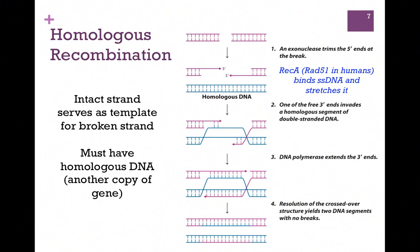At the top, we have our broken DNA. The first protein to bind is an exonuclease that trims the ends to produce a single-stranded region within the broken DNA. RecA protein in prokaryotic systems and RAD51 in humans recognizes the single-stranded DNA, binds to it, and stretches it, inducing what's called strand exchange. In the end, the intact strand directs the synthesis of one of the broken strands — the two DNA segments exchange partners, and the intact DNA directs repair of the broken one.